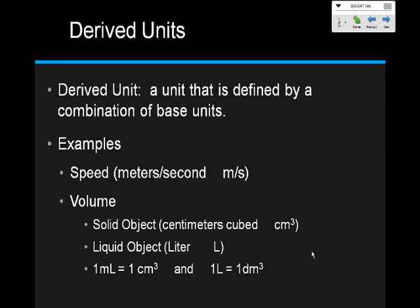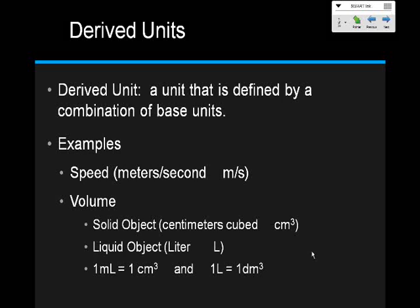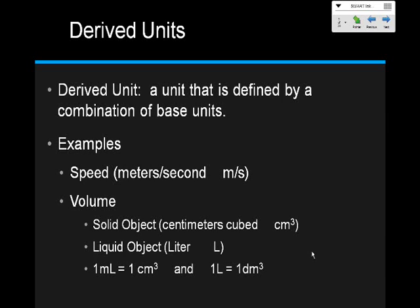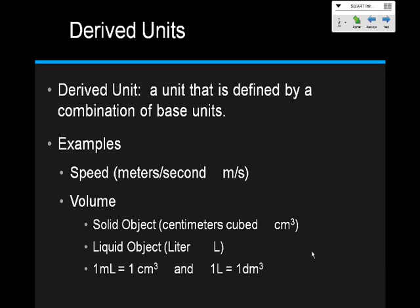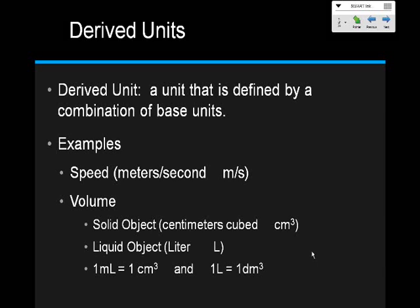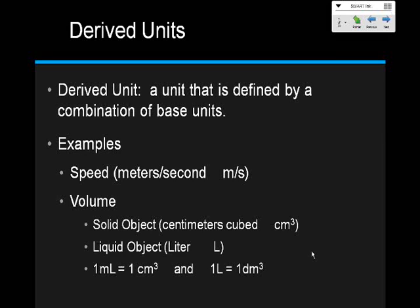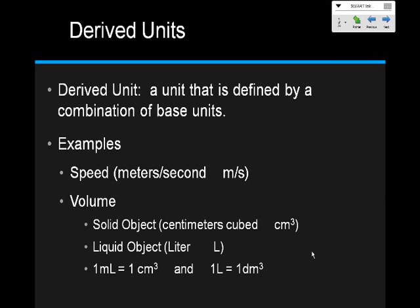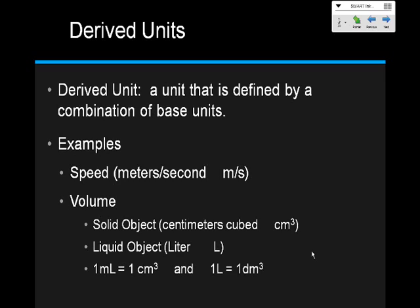Volume — for solid objects you have centimeters cubed. So you're putting centimeters together three different times: centimeters times centimeters times centimeters. The reason our volume is centimeters cubed is because to get volume, we do length times width times height, so it's centimeters times centimeters times centimeters.